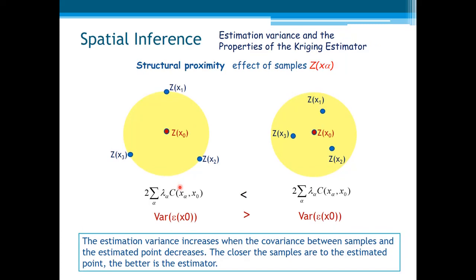Let's see the other property: structural proximity. This means the effect of samples zx alpha on the estimated covariance. The closest the samples are to the point to be estimated, the better the estimator, since we have more information. In this case, the covariance between samples and the estimated point increases, and the estimation variance decreases. This leads to a better estimator.